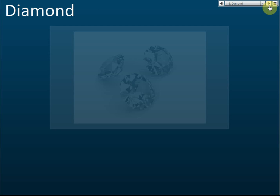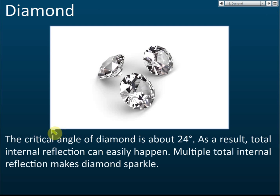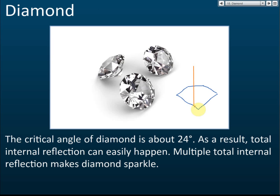Diamond: when you look at a diamond it is very shiny. That's because the refractive index of diamond is very high, so the critical angle is very small — only 24 degrees. As a result, total internal reflection happens very easily. Multiple total internal reflections make diamonds sparkle. When light rays enter the diamond, they don't exit immediately but are reflected multiple times and then come out from different surfaces, making the diamond look sparkling.